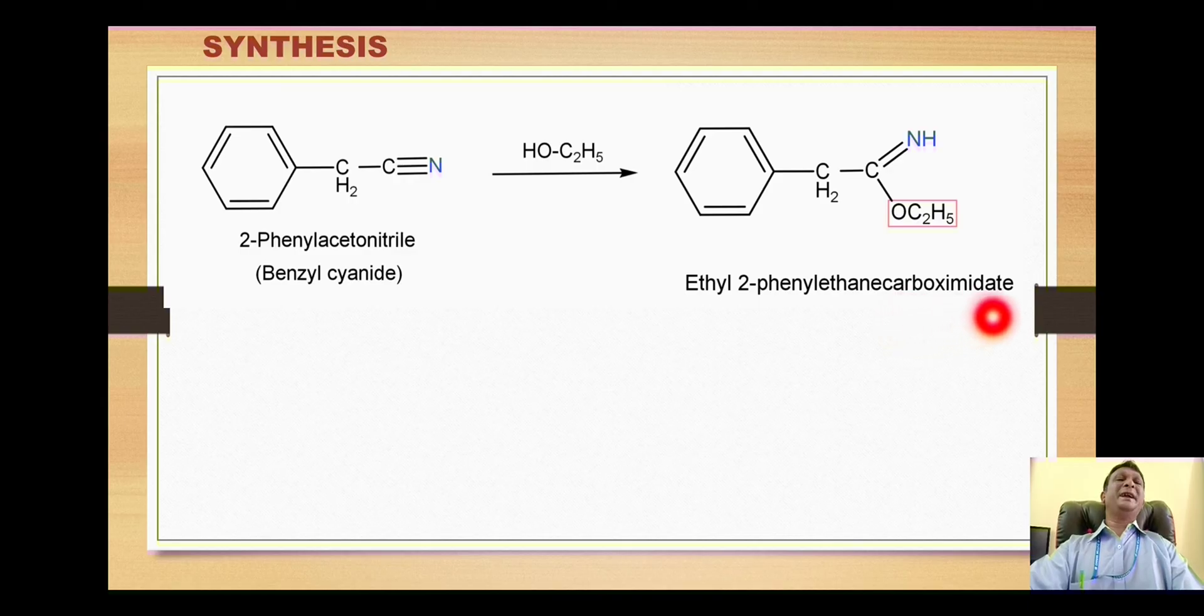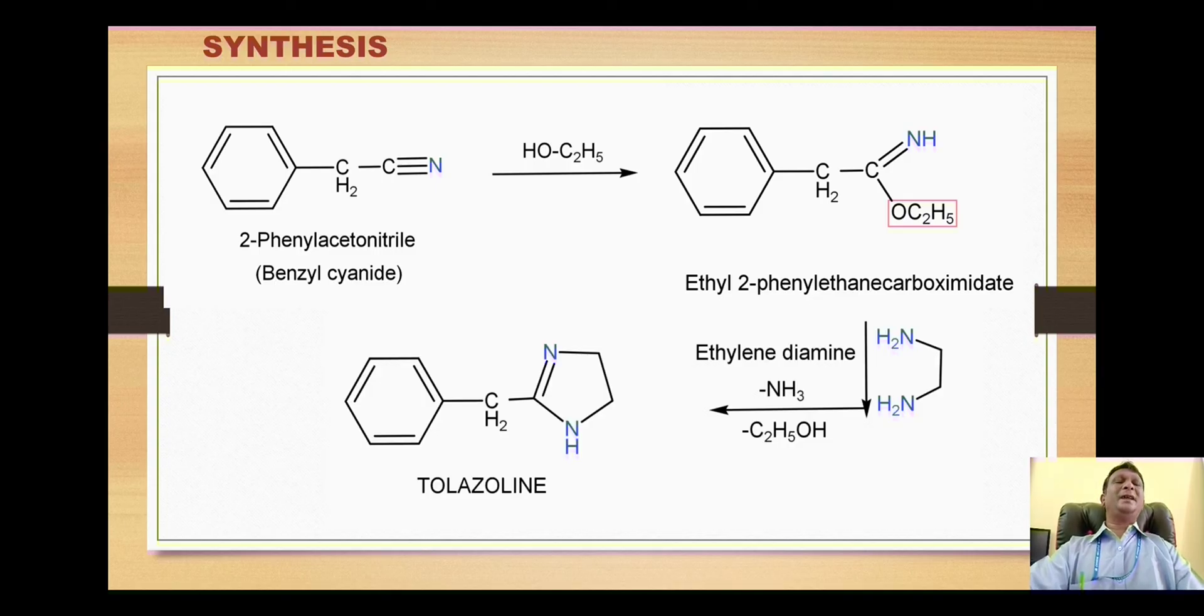With this we have formation of this ester which is called ethyl carboxymidate. You can find that here is C double bond NH, so it is called carboxymidate. This carboxymidate derivative is then reacted with ethylenediamine. When reaction takes place, one of this hydrogen and this NH2 group will make ammonia which is removed, and thus this carbon gets attached to this nitrogen.